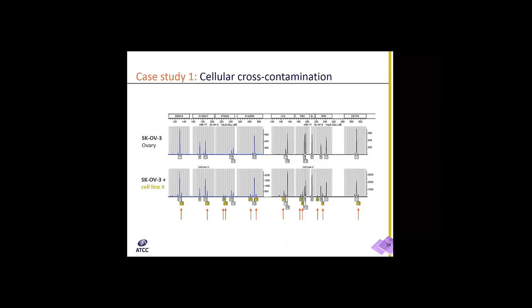In this case study, we have an example of cross-contamination at its early stage. SKOV3, an ovarian cell line, was contaminated with another cell line indicated in yellow. We know this because we have multiple loci at multiple sites showing the contamination. This is really an early stage of contaminating cells, and it's not always easy to catch unless you are performing routine STR characterization. The contaminating cells will typically take over the culture in a very short time, so testing your cells routinely is very important.